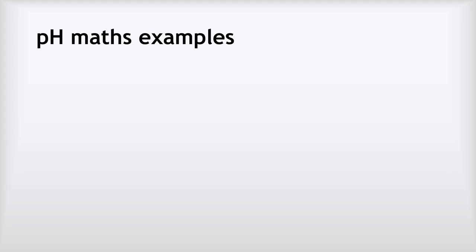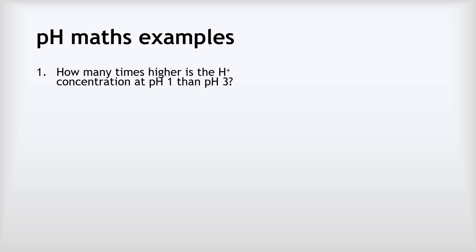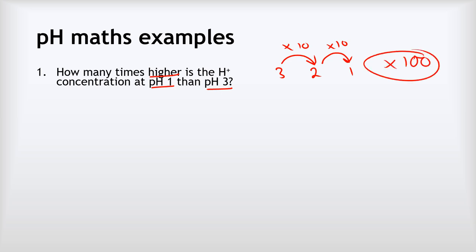Worked example one: how many times higher is the hydrogen ion concentration at pH 1 compared to pH 3? Going from pH 3 to pH 2, we multiply by 10; then from pH 2 to pH 1, we multiply by 10 again. Multiplying by 10 twice gives a factor of 100. So the answer is 100 times greater. A common mistake is to add 10 + 10 = 20 — but we must multiply, not add.